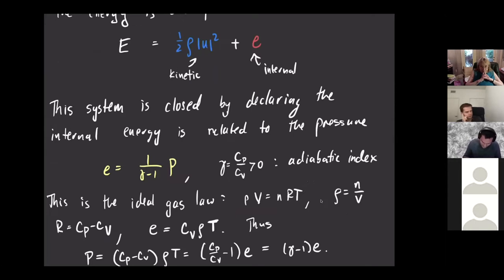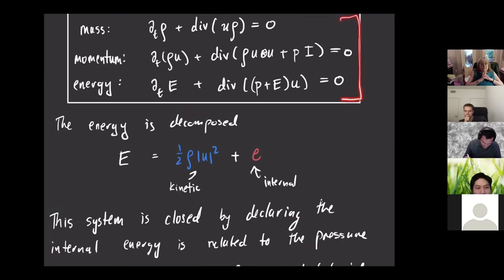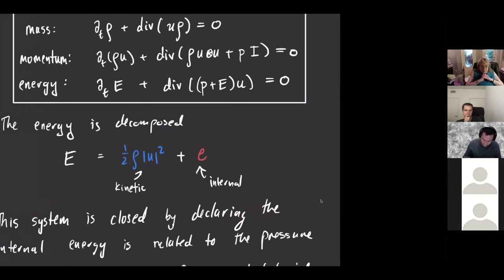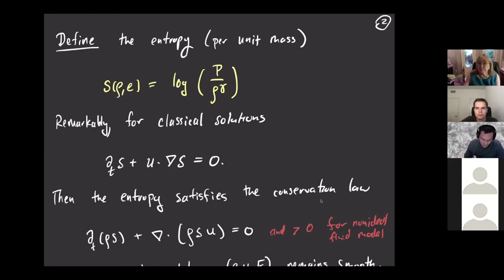With that, we now have a completely closed system of equations for rho, U, and E. There's a special quantity when studying compressible media called the entropy, which for an ideal gas is defined by the logarithm of the ratio of P and rho to the adiabatic index gamma.